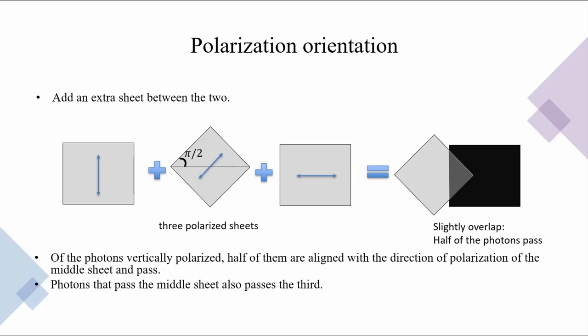What is happening is that of the photons vertically polarized, half of them are aligned with the direction of polarization of the middle sheet and pass through it. Photons that pass the middle sheet also pass the third sheet. Therefore, there is some light passing through all three sheets, as can be seen.